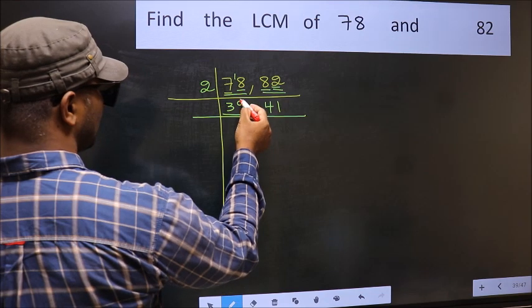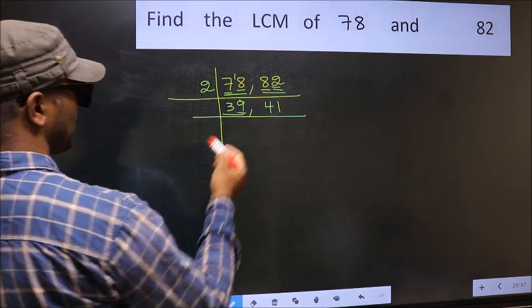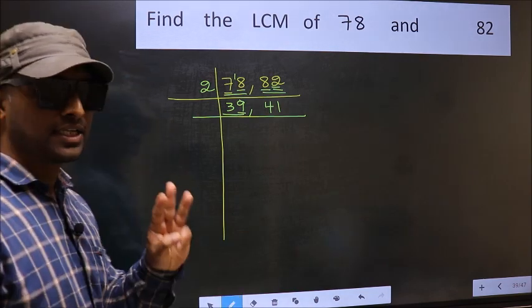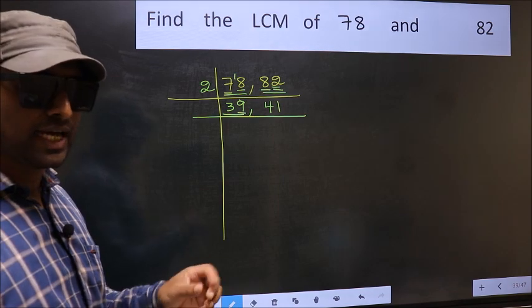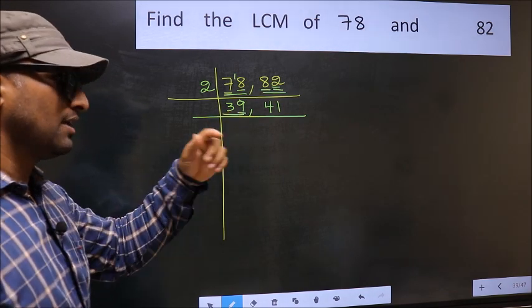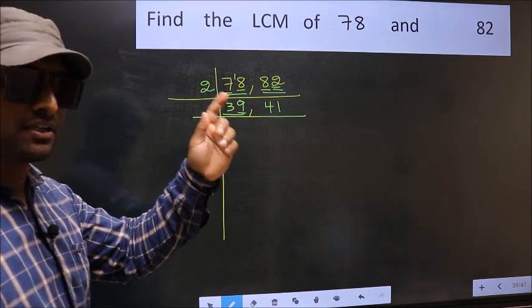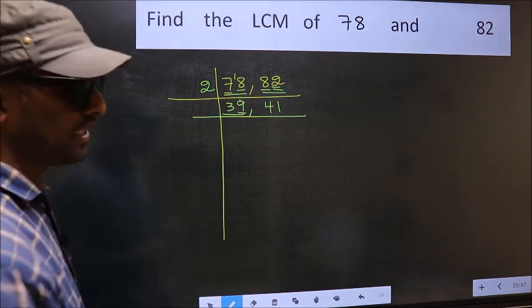Now, here we have 39. Last digit 9, not even, so not divisible by 2. Next prime number, 3. To check divisibility by 3, add the digits. 3 plus 9, we get 12. And 12 is divisible by 3. So, this number also divisible by 3.